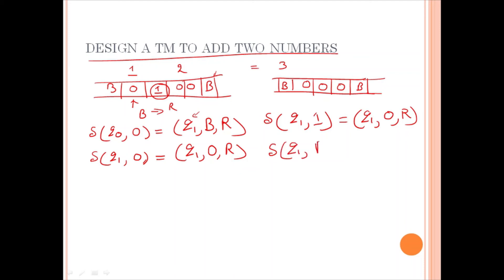So, what you have to do, q1 blank, that is nothing but you are going to reach at the final state, writing blank at that symbol and this move is not going to be defined. So, machine will halt and you are going to have the state as the final state.